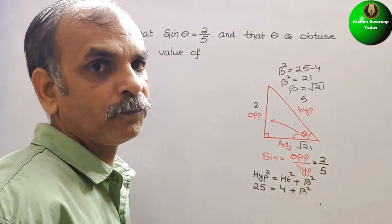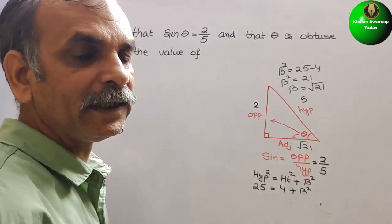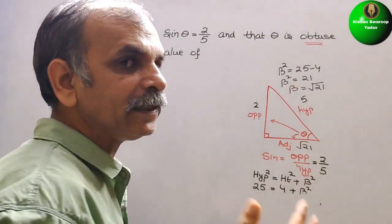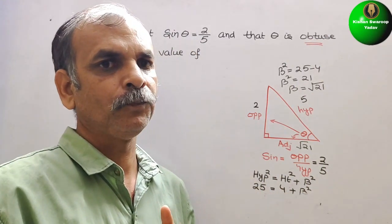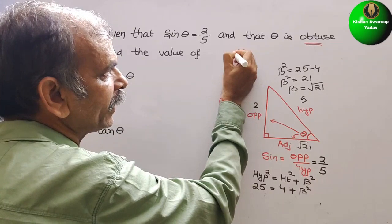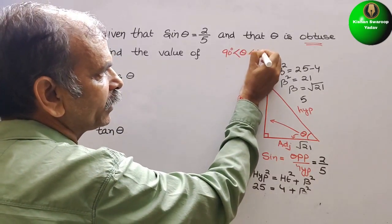So now, see that, what they have told? They have told theta is obtuse. Obtuse means it is greater than 90 degree and less than 180 degree. So we can say theta is greater than 90 degree and less than 180 degree.